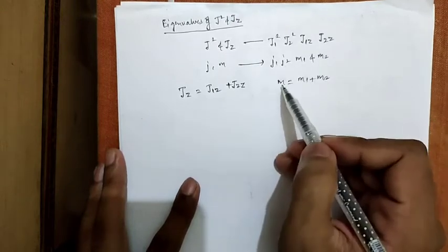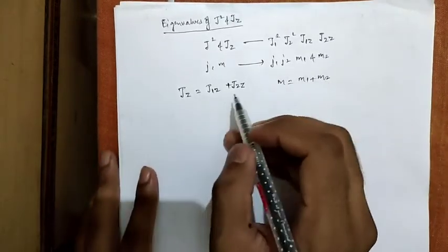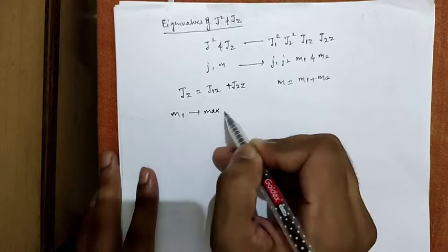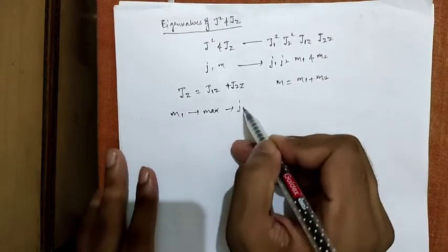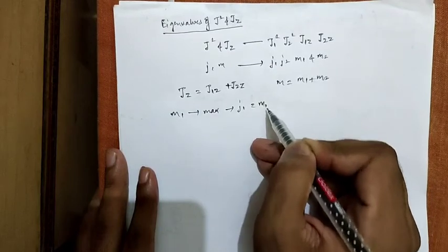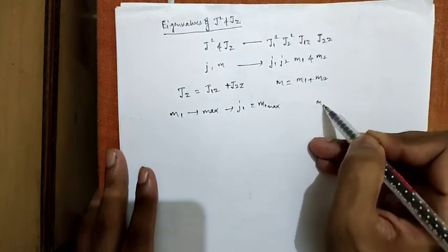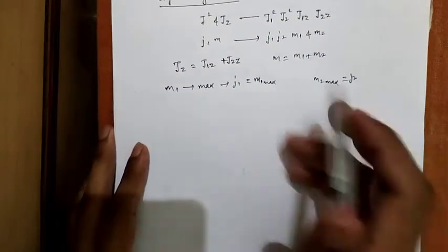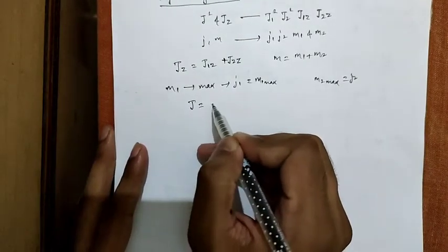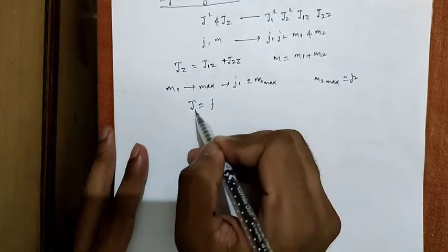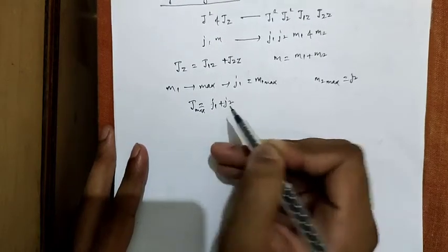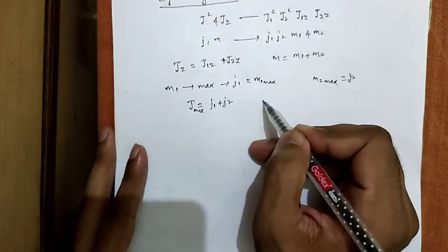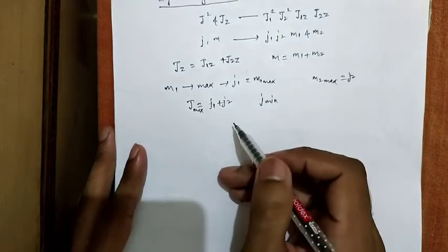We know the value of m in terms of m1 and m2 is m1 plus m2. The maximum value that m1 can take is j1, and the maximum value that m2 can take is j2. Therefore the maximum value that j can take is j_max equals j1 plus j2.